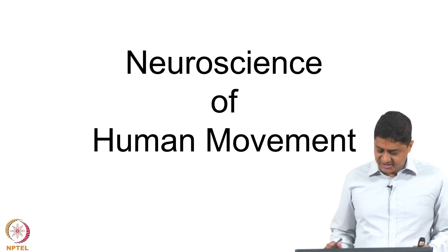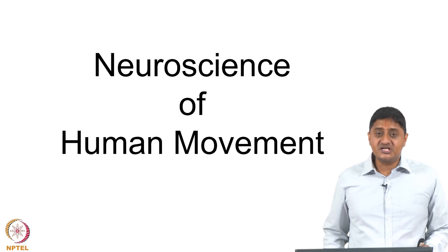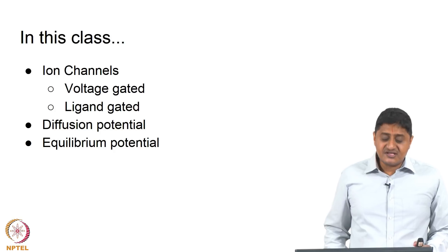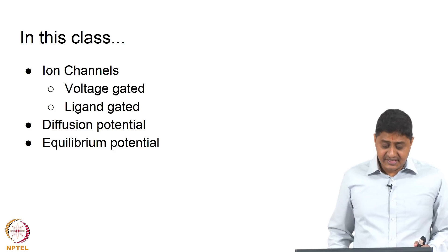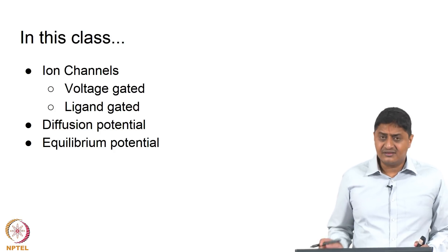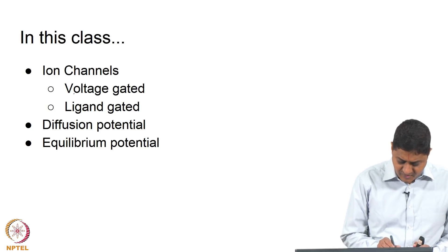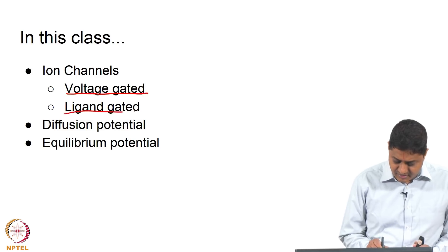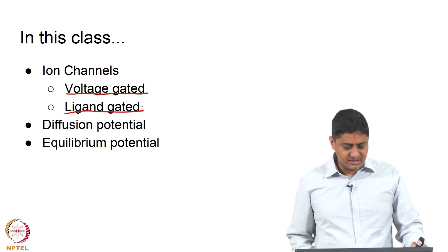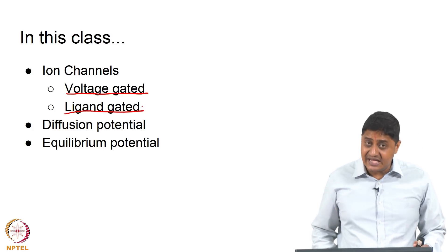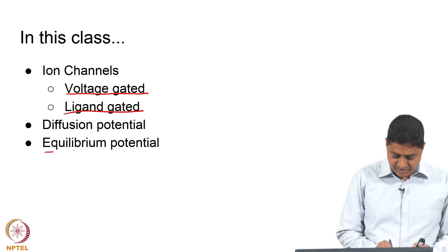Good morning, welcome to this class on Neuroscience of Human Movement. This is part 2 of our discussion on Membrane Physiology. In this class we will be talking about ion channels and different types of ion channels. We will give examples of voltage-gated ion channels and ligand-gated or chemically-gated ion channels, and we will be talking about diffusion potential and defining the equilibrium potential.